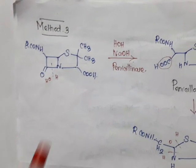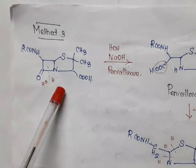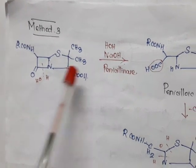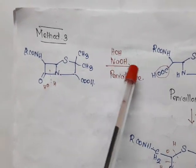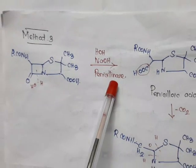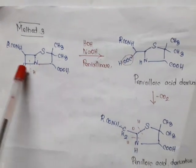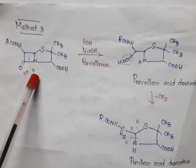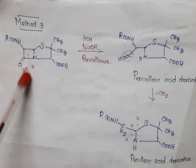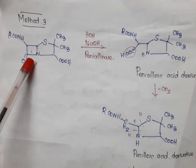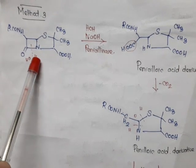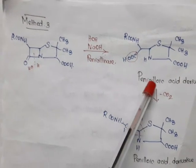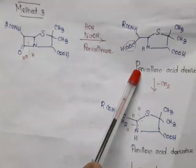Now we will see method 3. In the third method, similar to the first, we go for hydrolysis by means of sodium hydroxide or penicillinase. The bond between carbon and nitrogen is broken. With the nitrogen H is added, and with the carbon OH is added — similar to the methanol reaction. So we get NH here and COOH here. This is called penicilloic acid.